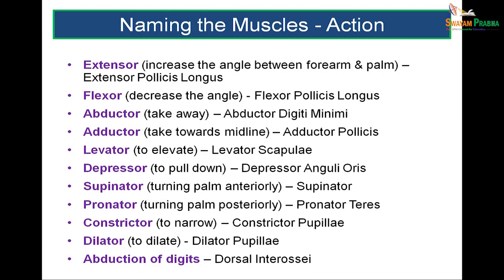The last feature used for naming muscles is the action produced. For example: extensor (extensor pollicis longus), flexor (flexor pollicis longus), abductor or adductor — taking away from or towards the midline. Levator or depressor — to elevate or pull down — like levator scapulae or depressor anguli oris. Supinator — turning the palm anteriorly; pronator — turning the palm posteriorly (pronator teres). Constrictor and dilator, like the pupillary muscles: constrictor pupillae or dilator pupillae. Muscles causing abduction of digits are called the dorsal interossei.